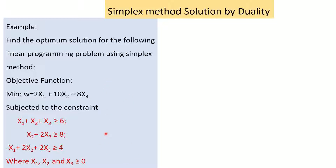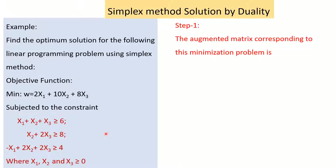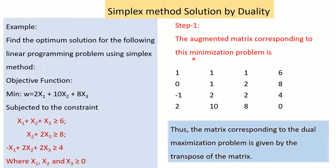The first step is to make this standardized. The augmented matrix corresponding to this minimization problem contains the coefficients of the first, second, and third constraints, along with the coefficients of the objective function. This is the augmented matrix corresponding to the minimization problem. The matrix corresponding to the dual maximization problem is given by the transpose of this matrix.